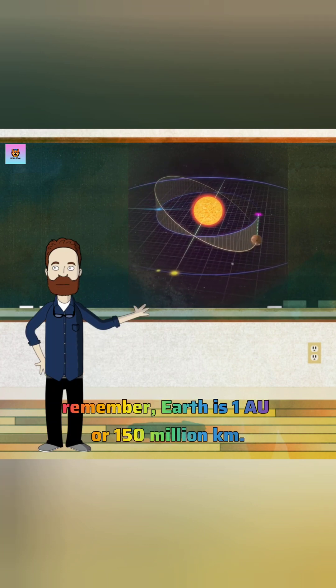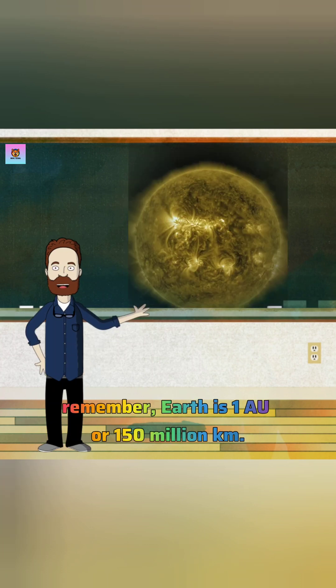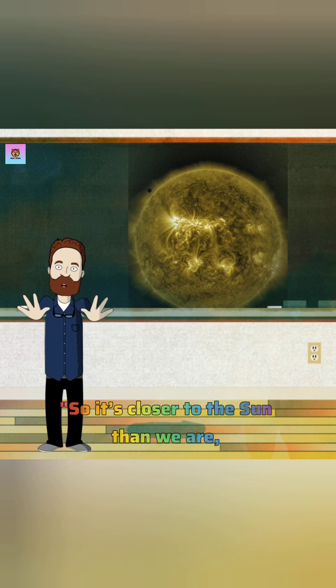Remember, Earth is one astronomical unit or 150 million kilometers. So it's closer to the sun than we are, which matters for its temperature.